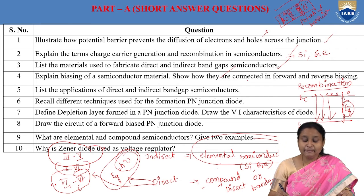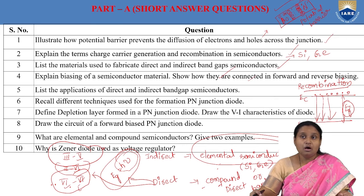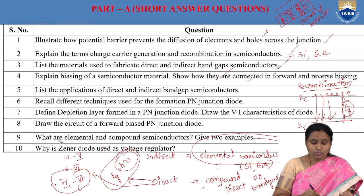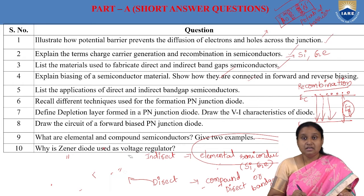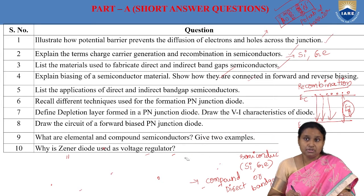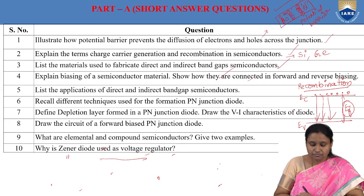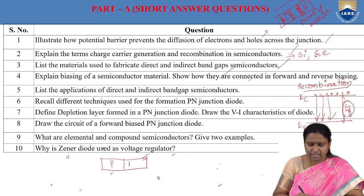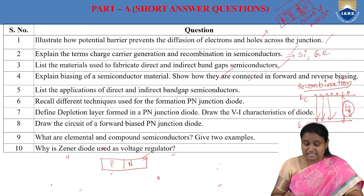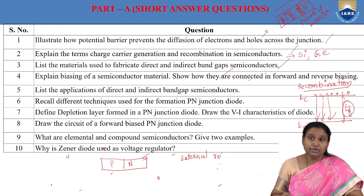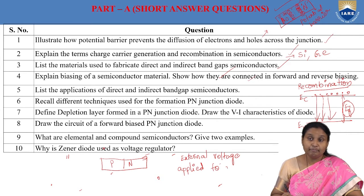Next question: explain biasing of a semiconductor. Show how they are connected in forward and reverse biasing. Biasing is nothing but applying external voltage to a PN junction diode. Application of external voltage to a PN junction diode is called biasing.